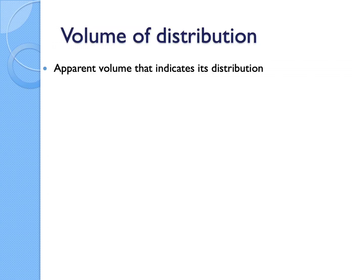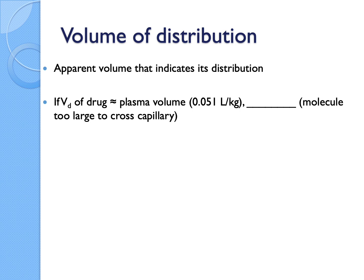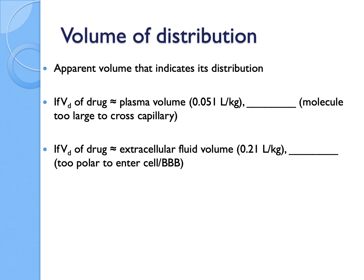There are four different models for VD, similar to the distribution models discussed earlier. I'm using the unit of liters per kg — some books use just liters, so the values will differ. I prefer liters per kg because many Western textbooks assume an average population weight of 70 kg, which may not reflect the local average. If all the drug measured is in the plasma, VD would be about 0.05 L/kg.